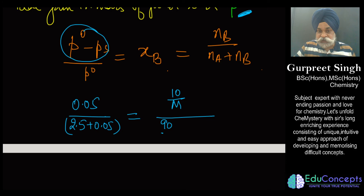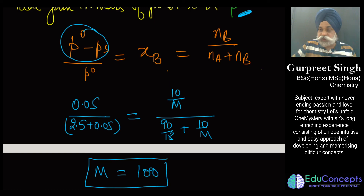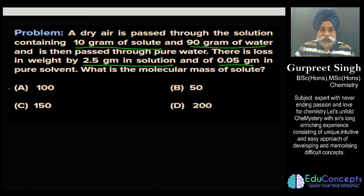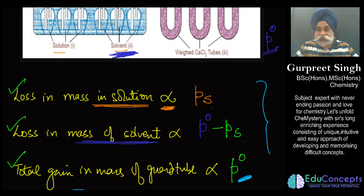Setting up the algebra with these values, you end up getting the molar mass M = 100. You can try solving it yourself. The answer to this question is 100. I hope this session has cleared the queries many students had. During the Ostwald Walker method, you just need to understand these three lines — if you can, you're through the question. Thanks a lot, have a nice day, stay safe, and take good care of yourself.